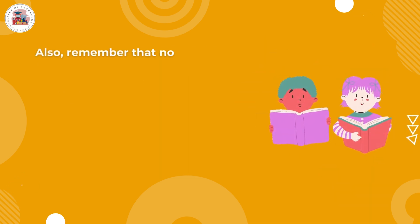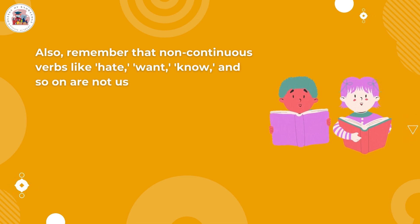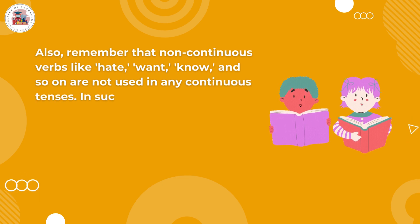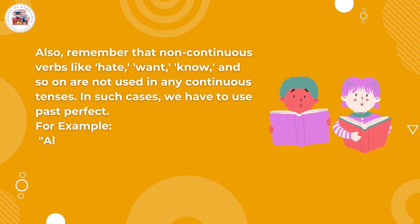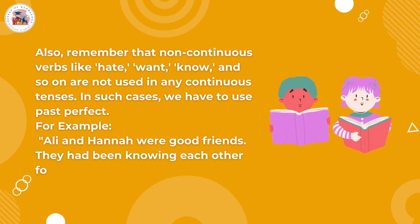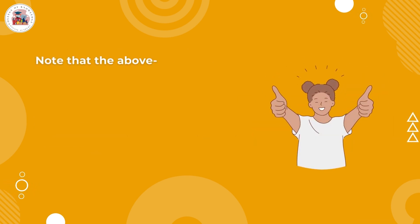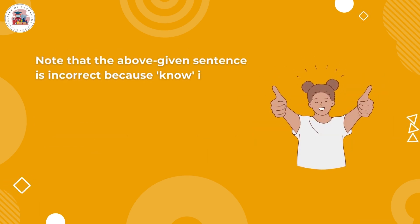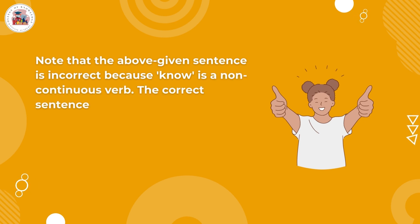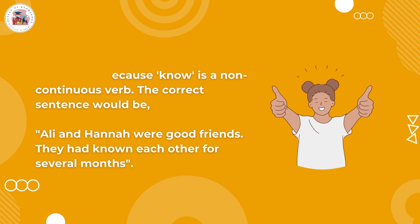Remember that non-continuous verbs like hate, want, know, and so on are not used in any continuous tenses. In such cases, we have to use the past perfect. For example, Ali and Hannah were good friends. They had been knowing each other for several months. Note that the above sentence is incorrect because 'know' is a non-continuous verb. The correct sentence would be: Ali and Hannah were good friends. They had known each other for several months.